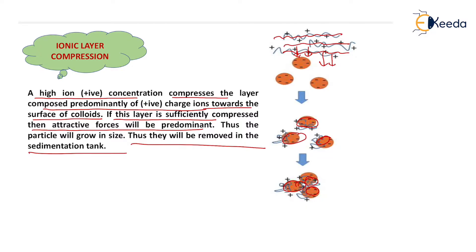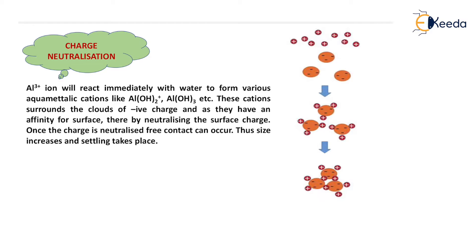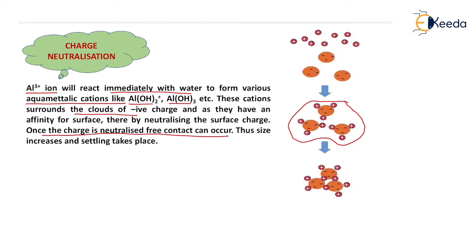In all the mechanisms, charge neutralization takes place and particle will grow in size and be removed later in the secondary sedimentation tank. The second mechanism is charge neutralization. Alum added in the water as coagulant reacts immediately with water to form various aqua metallic cations like Al(OH)²⁺ as well as aluminium hydroxide Al(OH)₃. This positive charge surrounds the clouds of negative charge and as they have affinity for the surface, thereby neutralizing the surface charge. Once the charge is neutralized, free contact can occur, all the particles come in contact with each other and grow in size, and settling takes place.